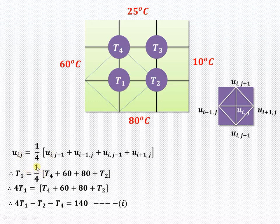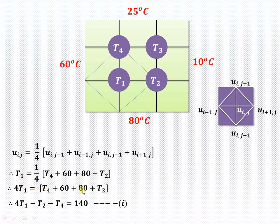Here, u_ij is our T1. So u_i,j+1 is T4, u_i-1,j is 60 (the edge temperature), u_i,j-1 is 80 (the edge temperature), and u_i+1,j is T2. Cross-multiplying by 4 gives: 4T1 = T4 + T2 + 140. Transferring T2 and T4 to the left side gives us the first equation: 4T1 - T2 - T4 = 140.